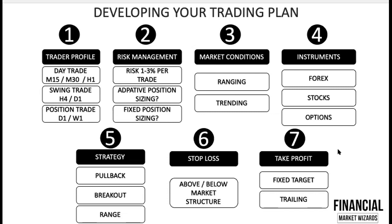The final step — step seven — deals with trade management and take profit. Once you've handled the downside, the next question is how to take profit. You cannot assume the market will always trend in one direction; it always goes back and forth. There are two ways to take profit. The first is a fixed target — for example, if you are risking 30 pips, you take 30 pips profit for a 1:1 ratio. You can also aim for 1:2 or 1:3 risk-to-reward — that is totally up to you.